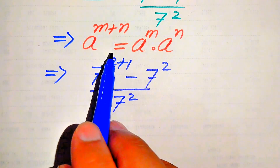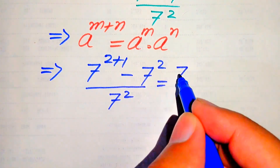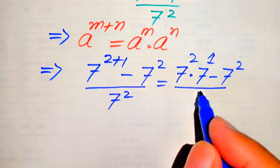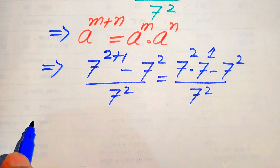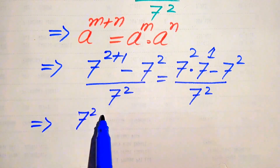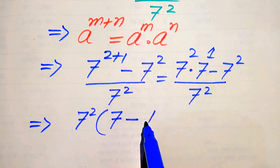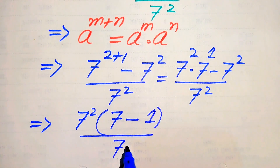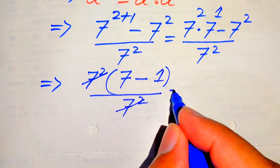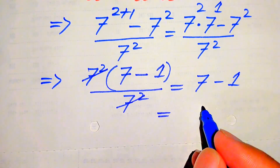Applying the exponent law, we expand to get 7 squared multiplied by 7 to the power of 1, minus 7 squared, all divided by 7 squared. Both terms in the numerator involve 7 squared, so we factor out 7 squared to get 7 squared times the quantity (7 minus 1), divided by 7 squared. The 7 squared cancels out, leaving 7 minus 1, which equals 6.